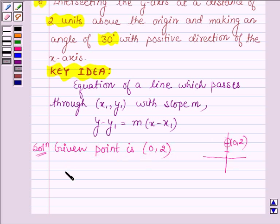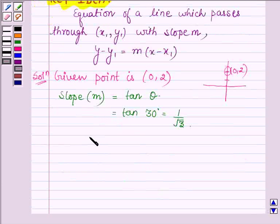And the slope, it is denoted by m, is given by tangent of theta, where theta is the angle made by the line with the positive direction of x-axis and that is 30 degrees. So we have tan 30 degrees, this is equal to 1 upon root 3. So the slope of the line is 1 upon root 3.